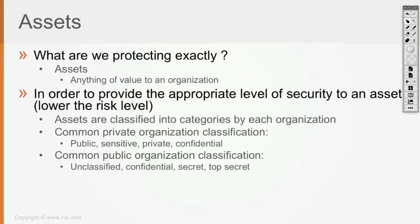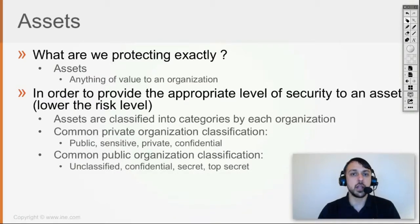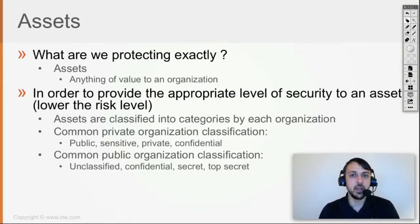For public organizations like governments, assets can be confidential, secret, and then top secret. What is called top secret is often not even available in electronic format — either it's information which is only spoken but never written, or it is written on a physical piece of paper, a physical document, but not available electronically.